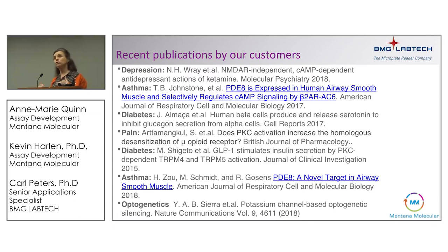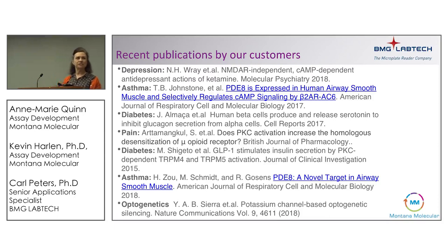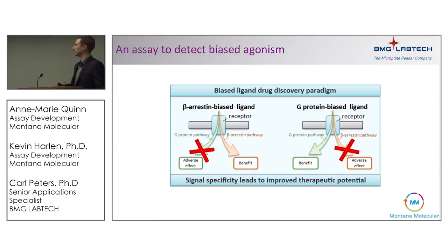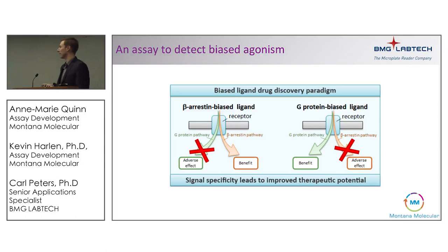He will start showing you data collected on the ClarioStar with the arrestin sensor and the G-protein assays. This is Kevin Horler, my colleague. Thanks, Anne-Marie, for that introduction to the technology. Before I go into the data, I want to briefly bring it back to the idea of detecting a biased ligand or biased agonism. To do this, we really need a simultaneous readout of both beta-arrestin and G-protein activation in the same cell.